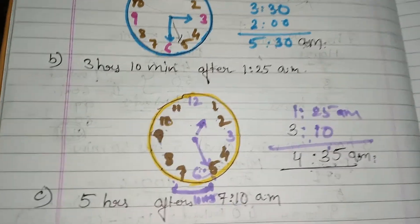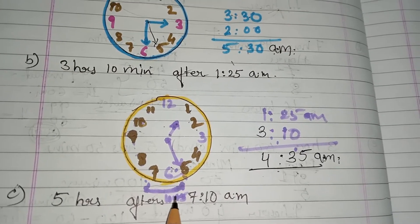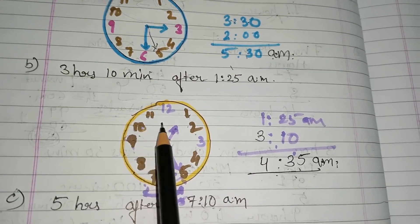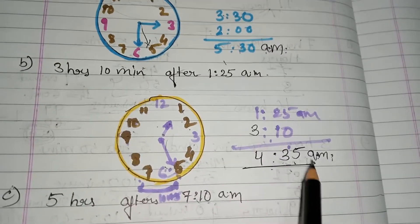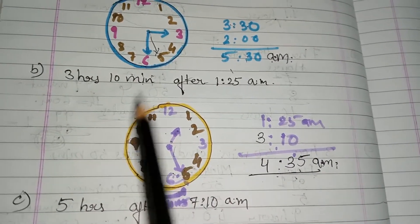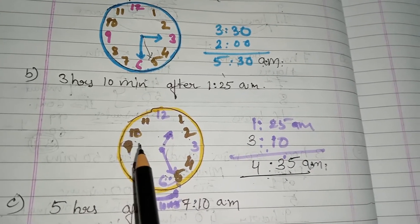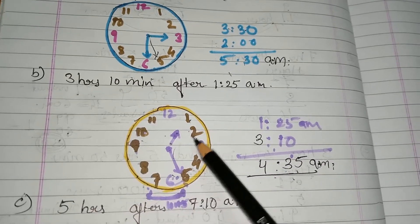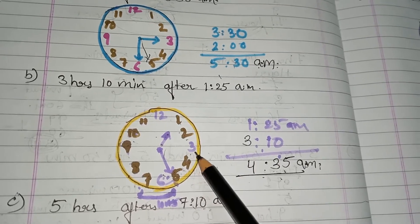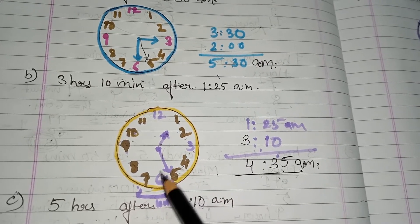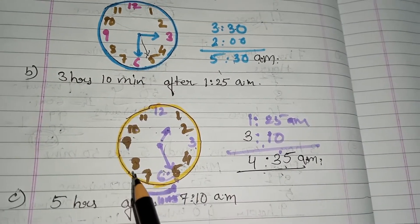Remember: after 12 o'clock, AM converts to PM, and after another 12 hours it converts back. Starting from 1:25 AM, after adding 3 hours 10 minutes you get 4:35 — you have not yet reached 12, so it remains AM. This is why it is very necessary to use a clock to understand AM and PM conversion.